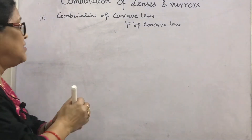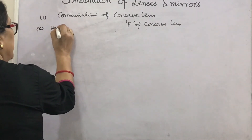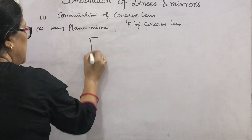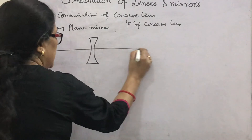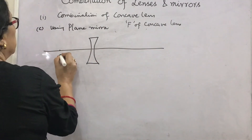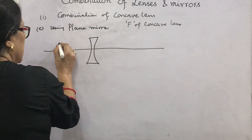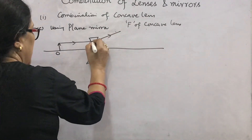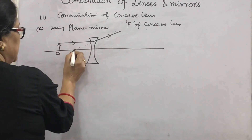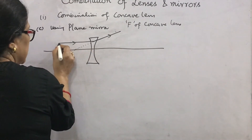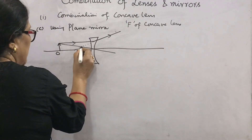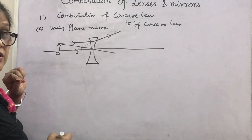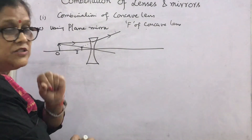The third method uses a plane mirror to find the focal length of the concave lens. As you know, the concave lens forms a virtual image. Place the concave lens on the optical bench. With object pin O, a ray parallel to the principal axis diverges such that on extending back it appears to come from the focal point, and a ray through the optical center passes straight — giving a virtual diminished image I. Since this image is virtual, a plane mirror is used to locate it.